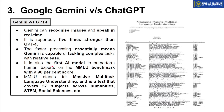Gemini is five times stronger than GPT-4 in data analysis and has fast processing enabling it to tackle complex tasks. It is the first AI model to outperform human experts on the MMLU benchmark with a 90% score. MMLU stands for Massive Multitask Language Understanding — a test covering 57 subjects across different areas including science, technology, engineering, mathematics, and social science.